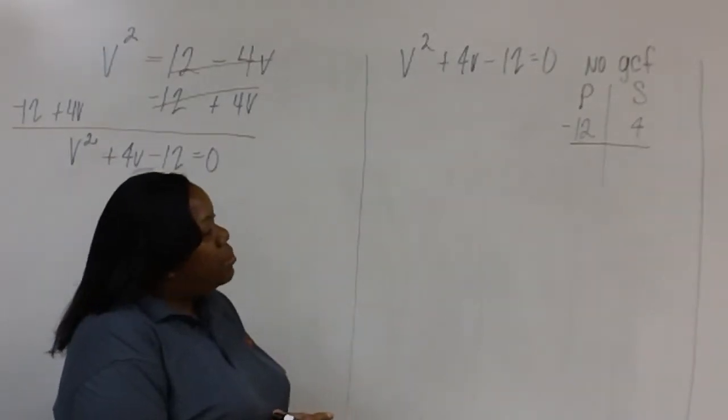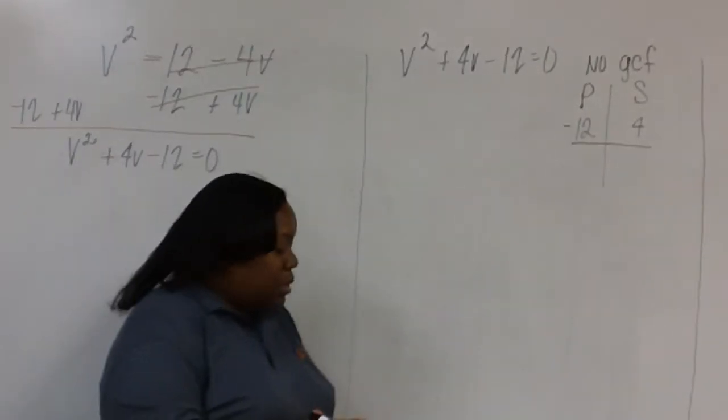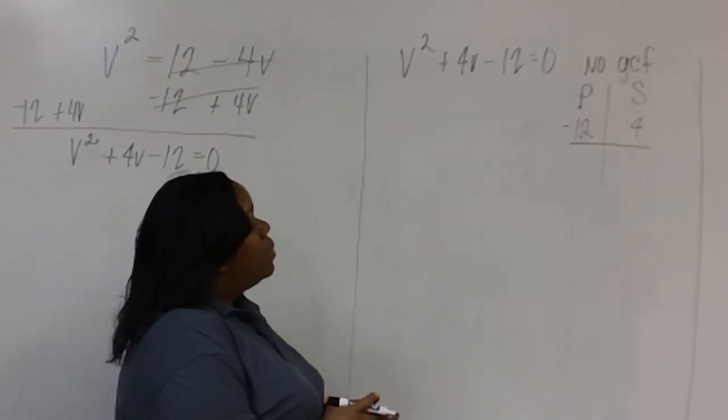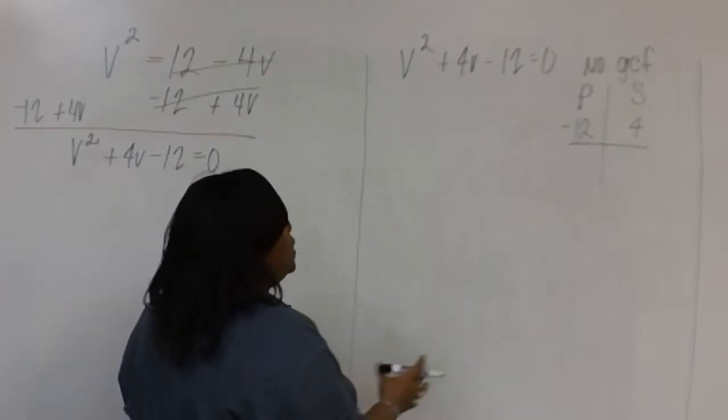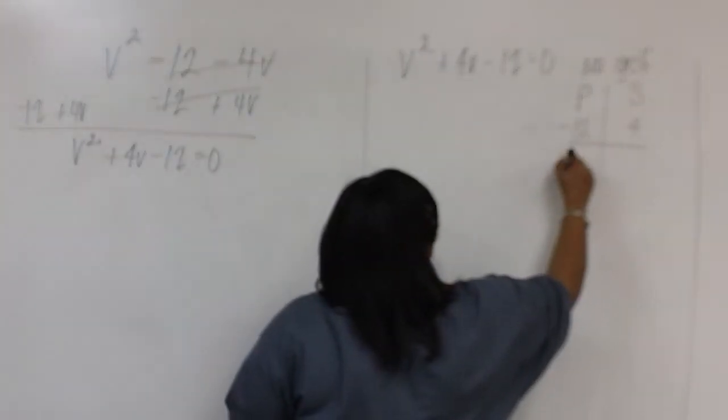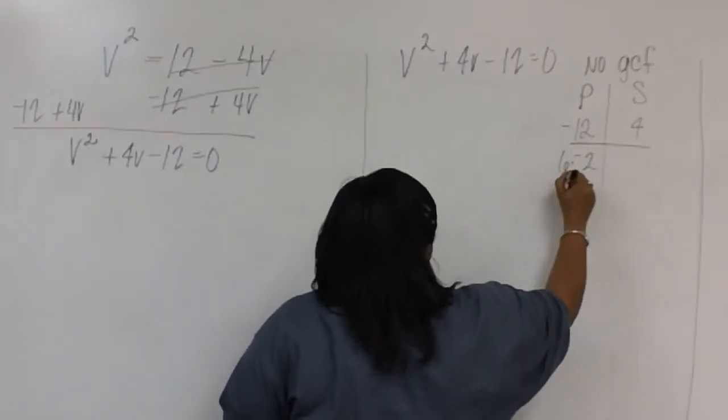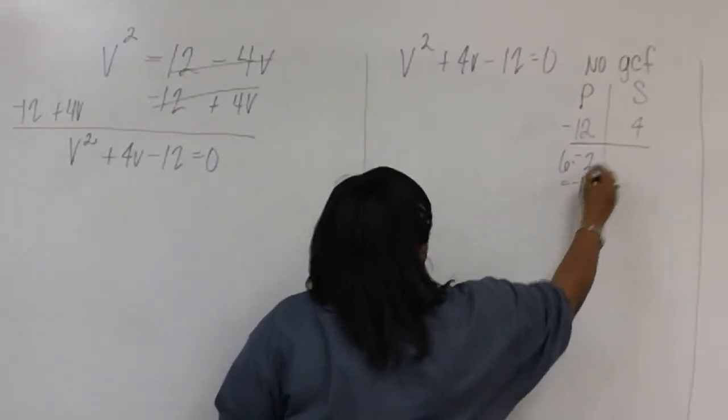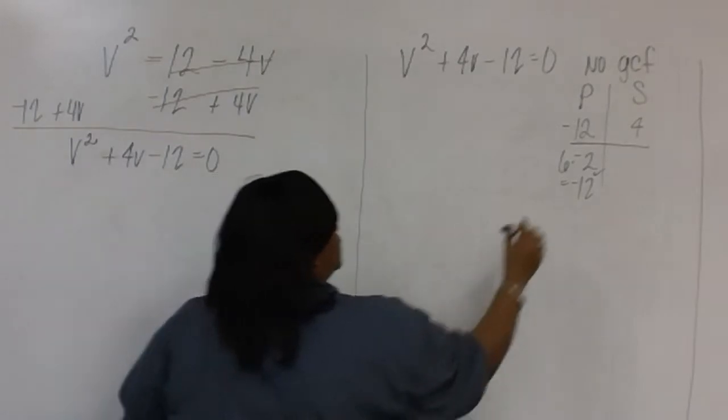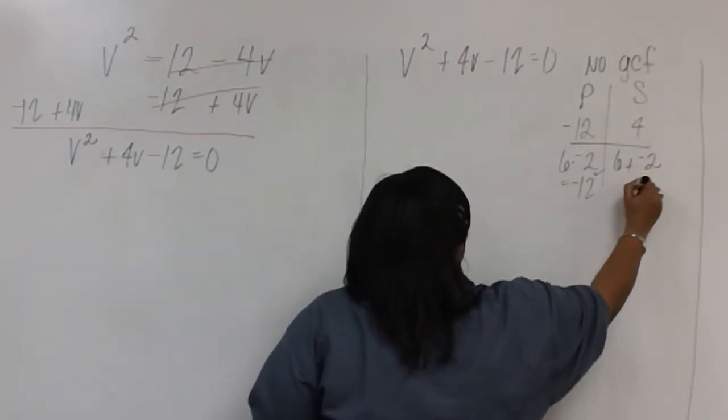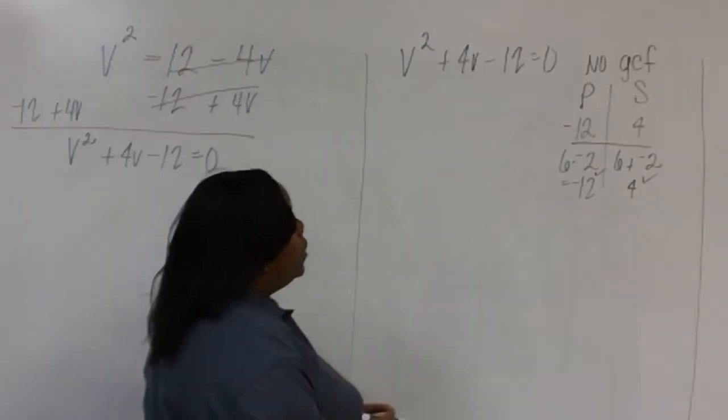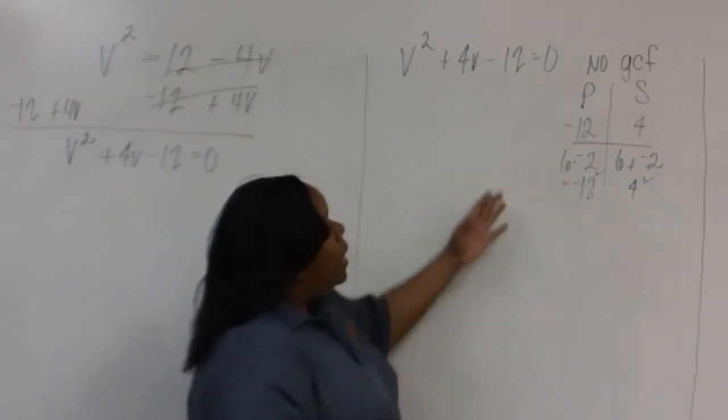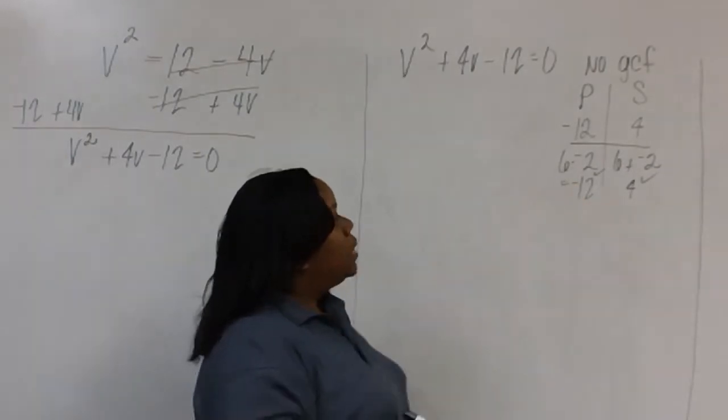So we need two numbers that when we multiply those numbers, we get a product of negative 12. But when we add those same numbers, we get a sum of 4. We can try 6 times negative 2, which gives us the negative 12 that we need. 6 plus negative 2 gives us the positive 4 that we need. So we'll be filling in the middle with the positive 6V and the negative 2V.